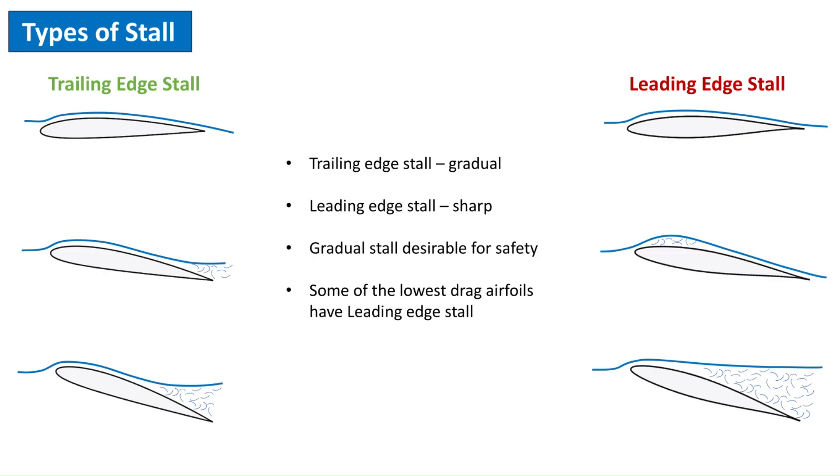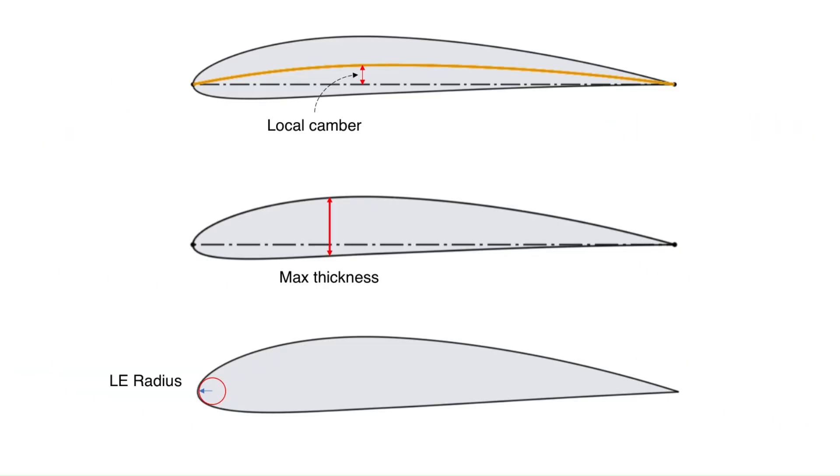In the next part we will see how the airfoil camber, thickness and leading edge radius affect its lift, drag and stall type. In general, this will allow us to look at an airfoil and get an idea of how it will behave, which will greatly simplify the selection process. So subscribe to the channel for latest updates on the upcoming videos.